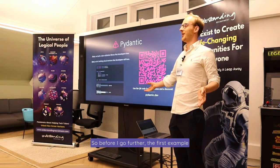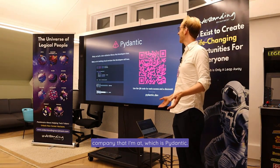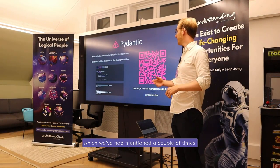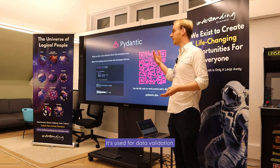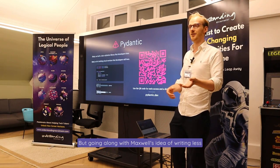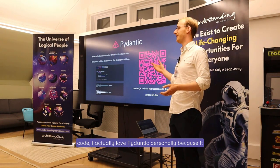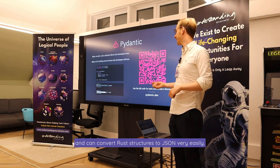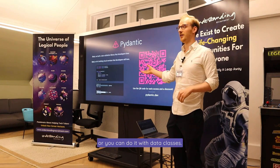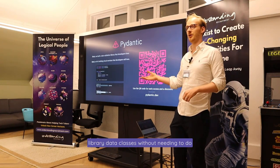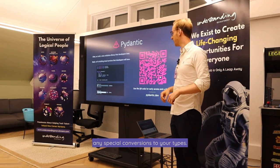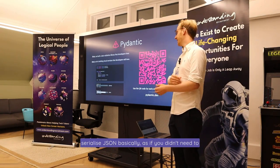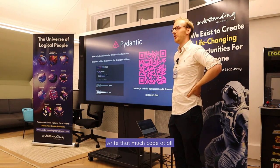The first example of Rust and Python working together is my company, Pydantic. You might have used this if you've used FastAPI. Pydantic and FastAPI are kind of two peas in a pod — it's used for data validation. I love Pydantic personally because it lets me write less Python code. You can create a base model or use data classes. Pydantic V2 even supports standard library data classes without needing any special conversions. Now that we've rewritten Pydantic in Rust, you get massive speedups and can serialize JSON very quickly.